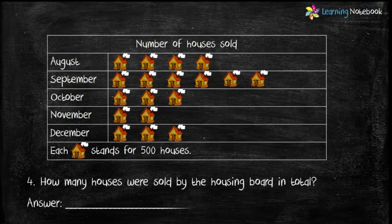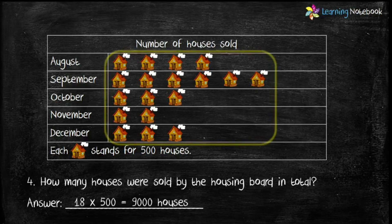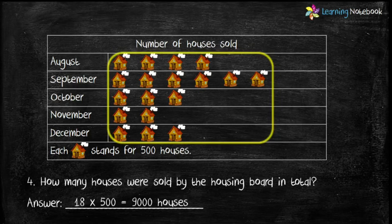Next question: how many houses were sold by the housing board in total? To solve this, we count the number of pictures for all the months. The total number of pictures for all months is 18, and since each house stands for 500 houses, we multiply 18 × 500 and get 9,000 houses sold in total.